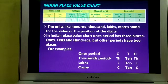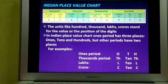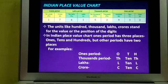Now we will understand the Indian place value system. In the Indian place value system, hundreds, thousands, lakhs, and crores are the units used to get the values of numbers. The ones period has three places: ones, tens, and hundreds. But other periods have two places. So ones, tens, hundreds, thousands, ten thousands, lakhs, and ten lakhs are the number place values.